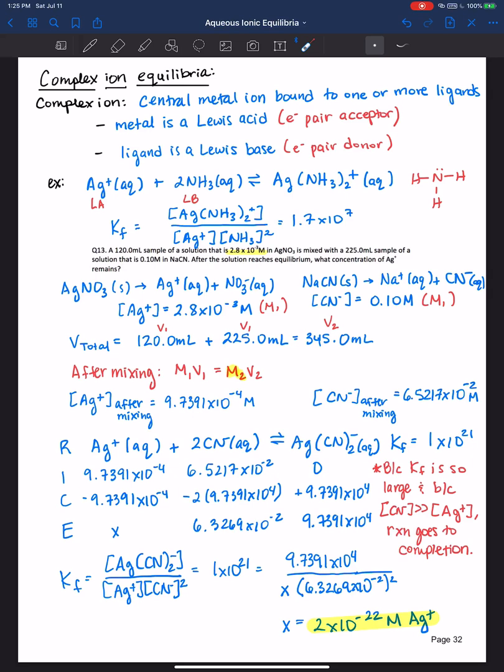Complex ion, you have a central metal ion acting as a Lewis acid, you have a ligand acting as a Lewis base. The formation constants for a lot of these complex ions are relatively large favoring product formation. In this example here we were mixing two solutions that were soluble in water but once our silver and cyanide found one another they wanted to form a complex ion. We had to make sure we calculated the concentrations of each of those solutions after mixing so don't forget your dilution formula M1V1 is equal to M2V2.